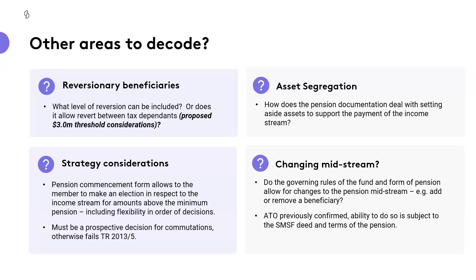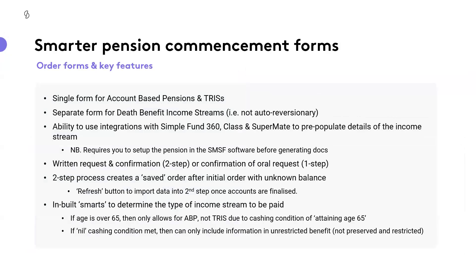If that election is not properly made, any payment taken is treated as a pension payment, and we don't get the debit in respect to the clawback we'd want through the commutation process. Going back to what our governing rules say, and then ensuring that lines up with the terms of the pension and the deed, as the ATO had previously instructed — we do have a single form here that covers account-based pensions and TRISs, and we now have a separate form that covers our death benefit income stream.